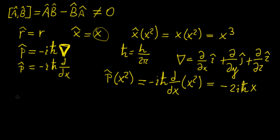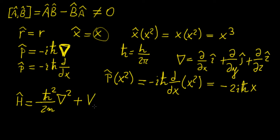Finally, I'll talk about the Hamiltonian operator. The Hamiltonian is generally defined in different ways, but in essence it is simply the sum of the kinetic and potential energies of a system. When the Hamiltonian operator is multiplied by a wave function, the eigenvalues are the energy levels of that wave function. The kinetic energy term corresponds to this first part, and the potential energy term corresponds to the second, so the eigenvalues give us the total energies of the system.